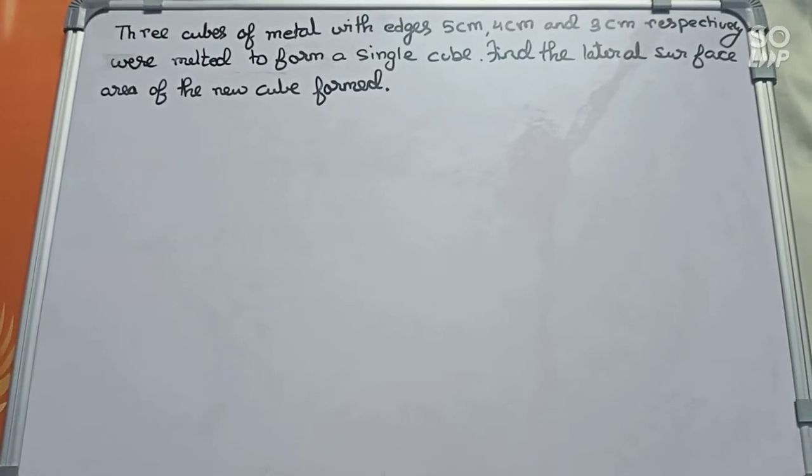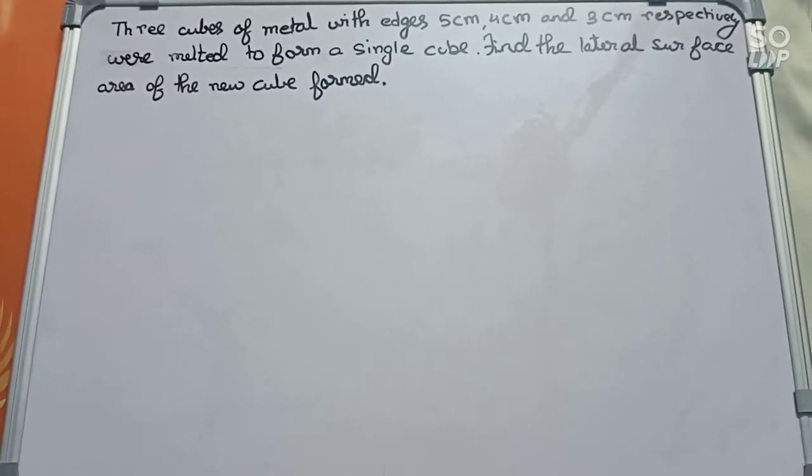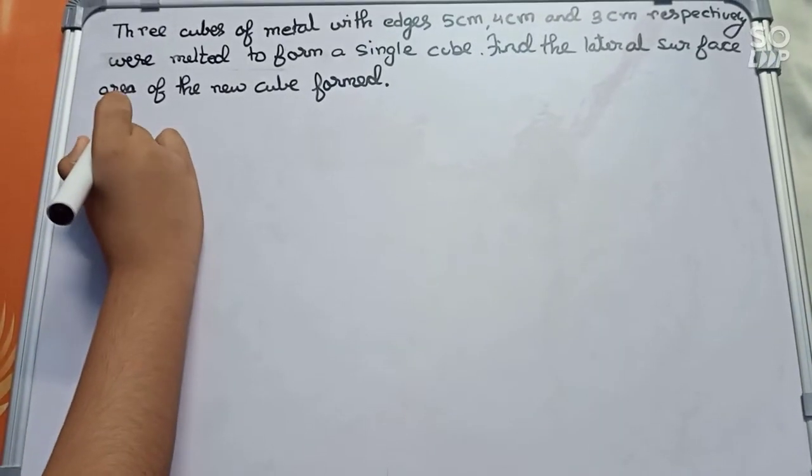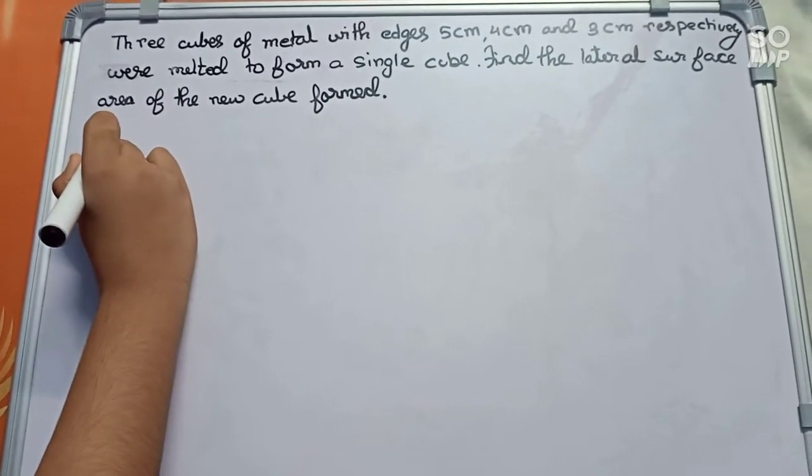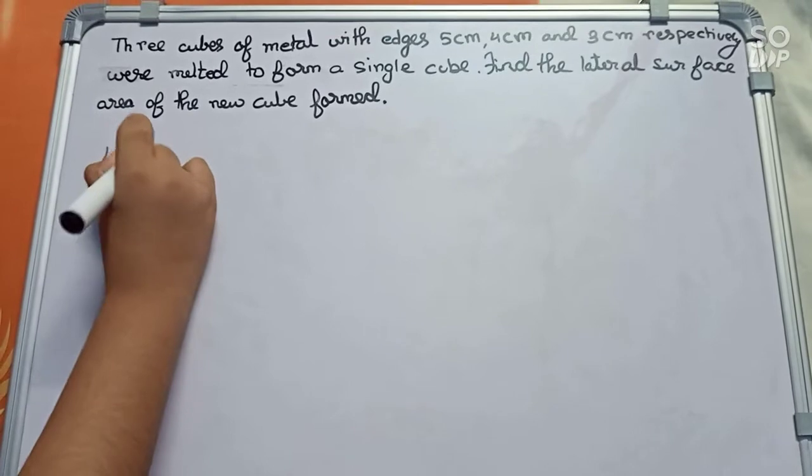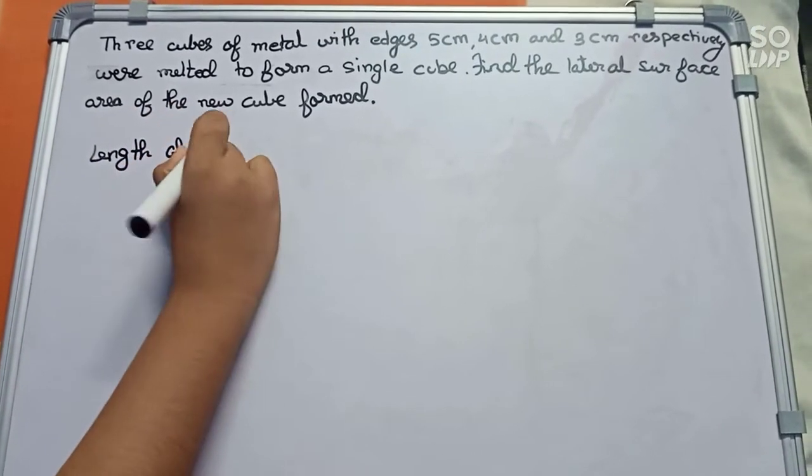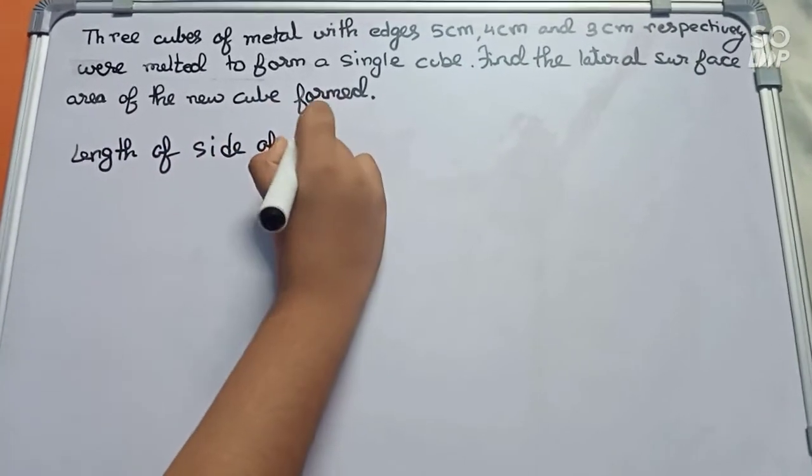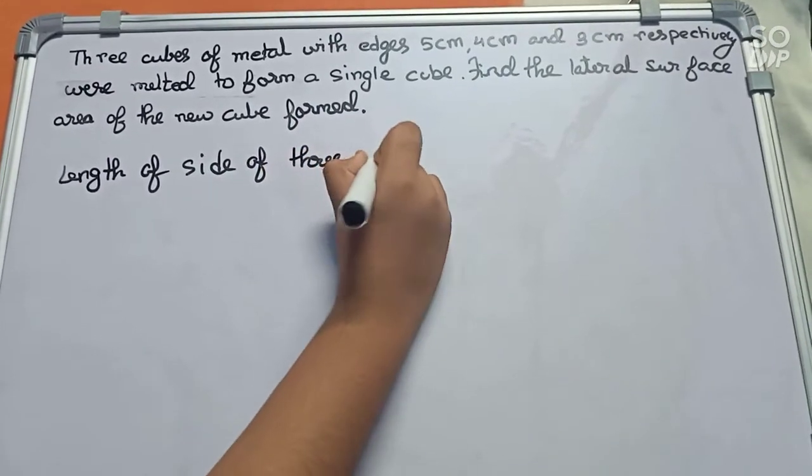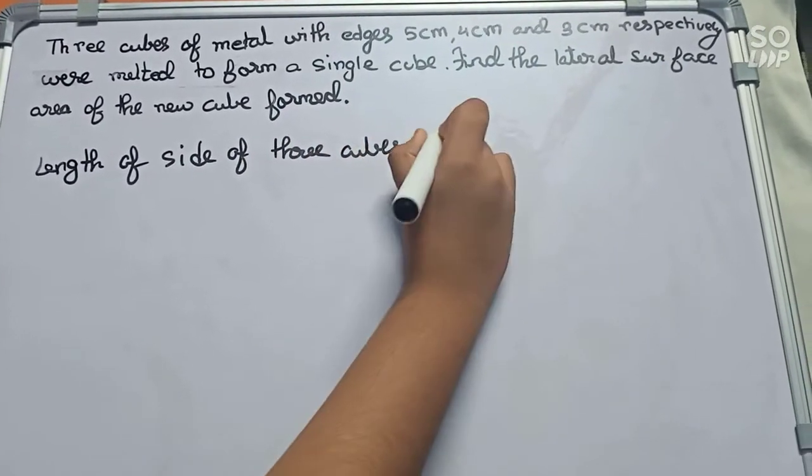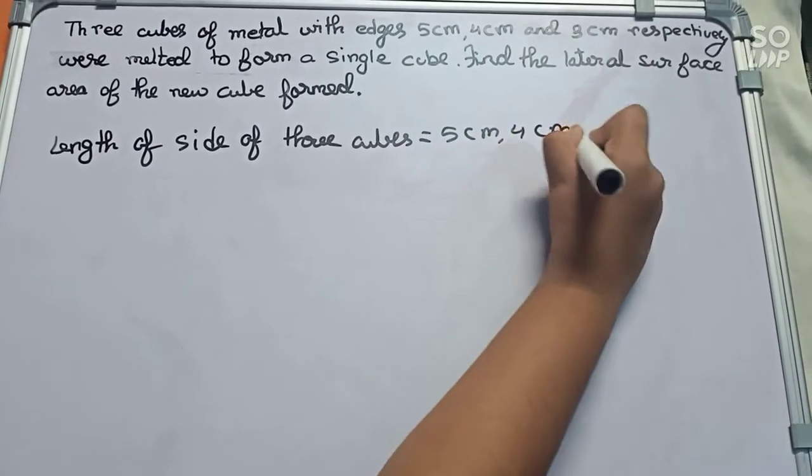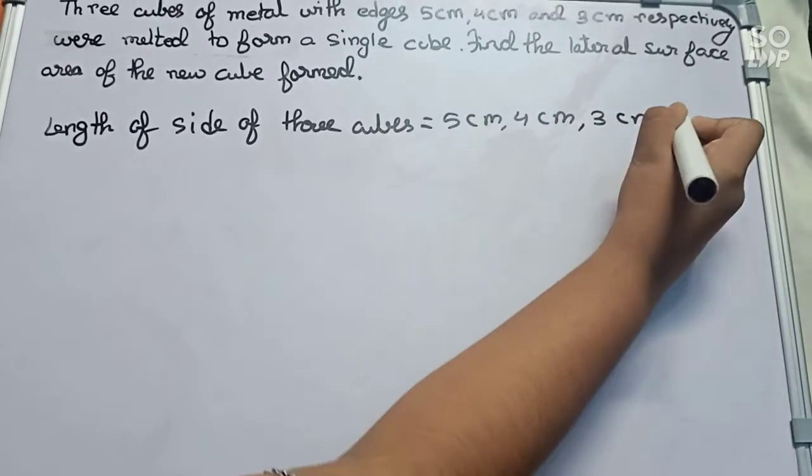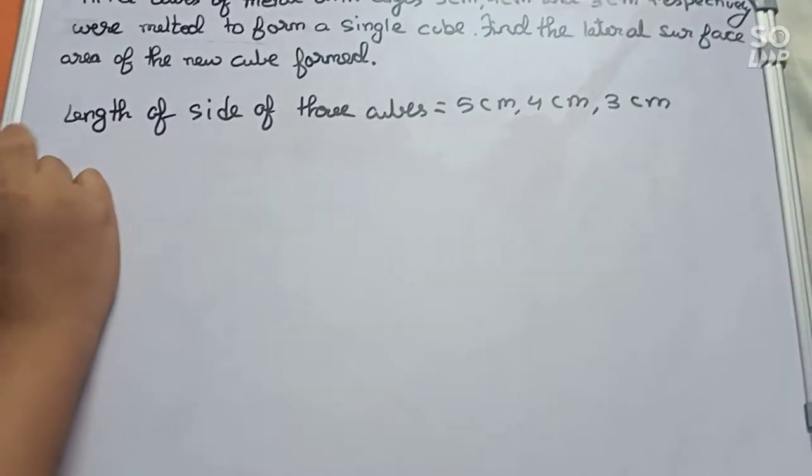So let's start. First we will find the total volume. Length of sides of these cubes equals 5 centimeters, 4 centimeters, 3 centimeters. Now we will find the sum of volume of the three cubes.